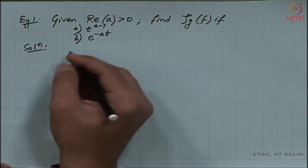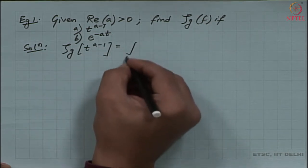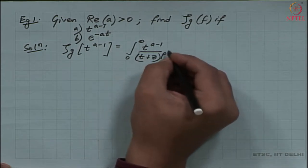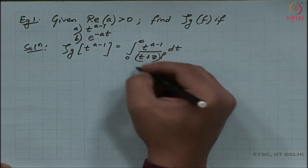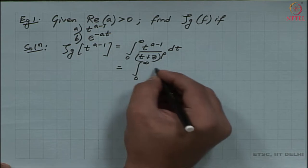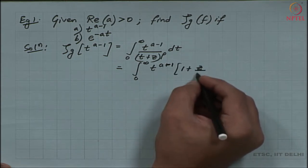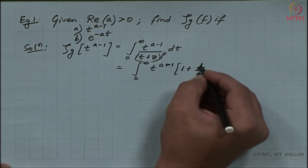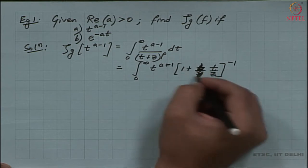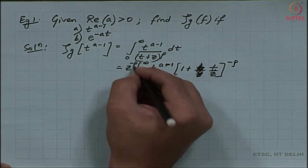Let us look at the first case. I need to evaluate the transform for t to the power a minus 1, given by the integral from 0 to infinity of t to the power a minus 1 divided by (t plus z) to the power rho, dt. I am going to rewrite this expression: the integral from 0 to infinity of t to the power a minus 1 times (1/t plus z) to the power minus rho, and we pull out a z, which brings in a z to the power minus rho.